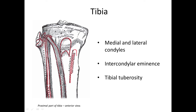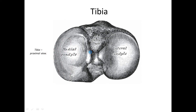Similarly as in the forearm, the bones of the leg connect with each other — we will discuss that later. We are still talking about the proximal end of the tibia, but now looking from the superior view. Here you can clearly see the condyles and the intercondylar eminence.